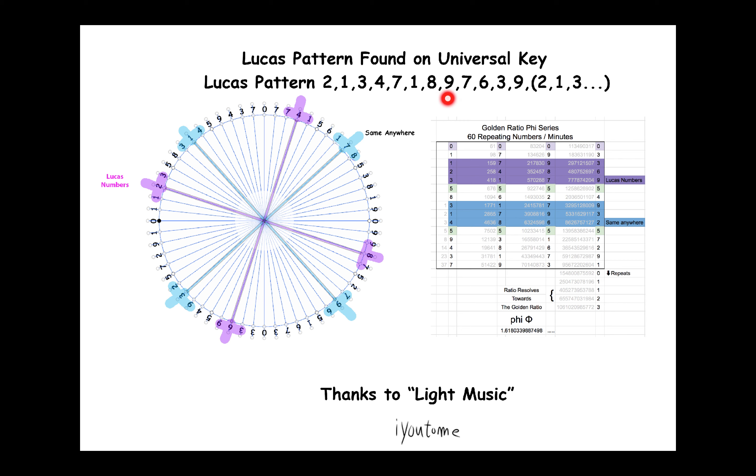1 plus 7 is 8, 8 plus 1 is 9, 9 plus 8 is 17, just keep the 7. Only keep the digits, not the tens. 7 plus 9 is 16, keep the 6. 7 plus 6 is 13, keep the 3. 3 plus 6 is 9, 9 plus 3 is 12. And as you can see, it just repeats. There's 12 repeating numbers.